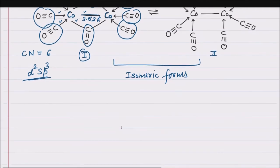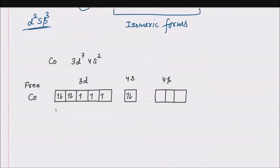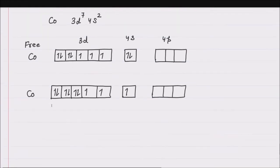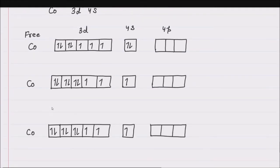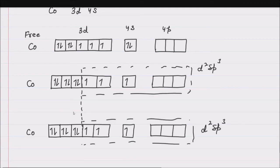Let us write the valence bond theory for this. The electronic configuration of cobalt is 3d⁷, 4s². When CO approaches cobalt, one electron from 4s is shifted to 3d. Each cobalt undergoes d²sp³ hybridization. One singly filled d²sp³ hybrid orbital of each cobalt overlaps with the other to form a sigma bond via d-d overlap — this is called a delta bond, which is one type of sigma bond.